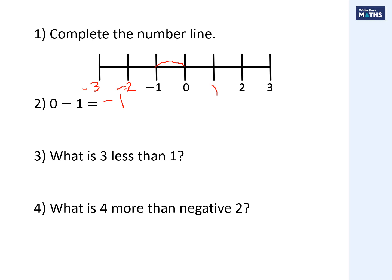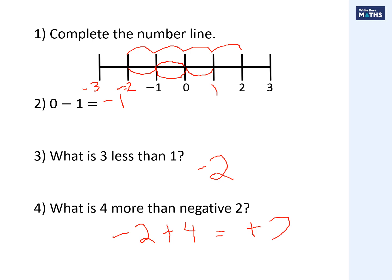Question three: what is three less than one? Start at one and go to the left three - one, two, three - you get minus two, or negative two. Question four: what is four more than negative two? So we're doing negative two add four. Start at minus two and go to the right four - one, two, three, four - and we get positive two.